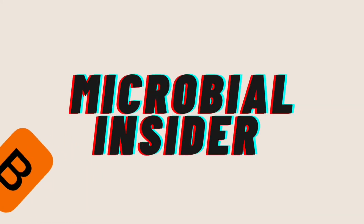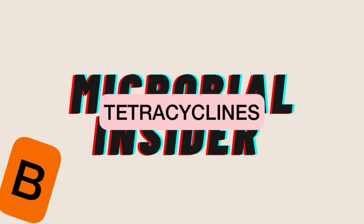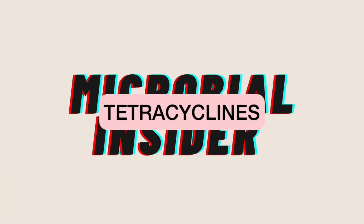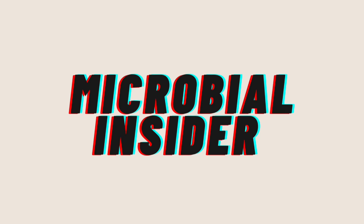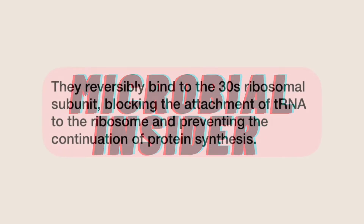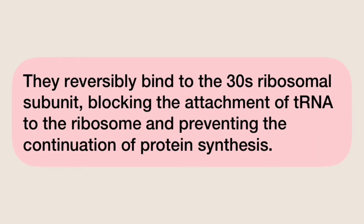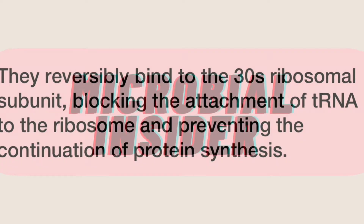Secondly, we have the tetracyclines. They reversibly bind to the 30S ribosomal subunit, blocking the attachment of transfer RNA to the ribosome and preventing the continuation of protein synthesis.